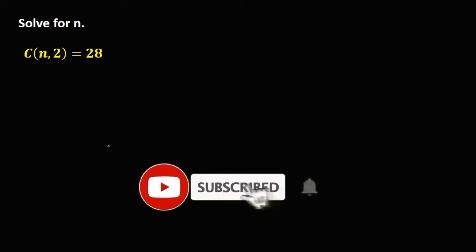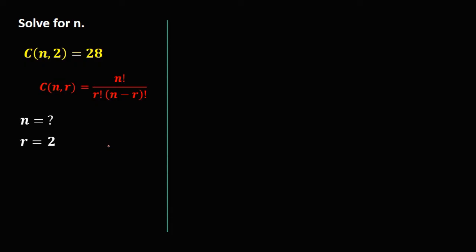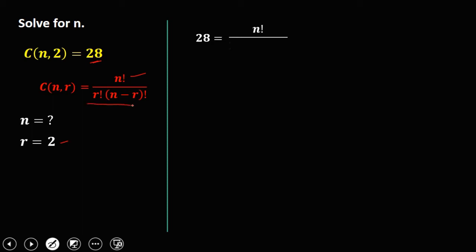Let's solve this problem: solving for n in a combination. We have C(n, 2) = 28. So n is the unknown and R is equal to 2. To solve for n, since the given is equal to 28, we have 28 equals n factorial over 2 factorial times (n minus 2) factorial.